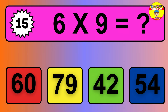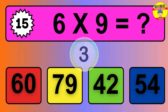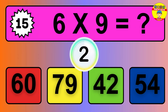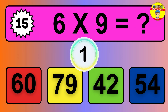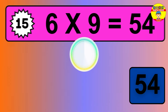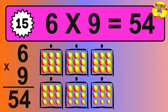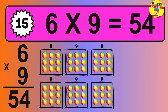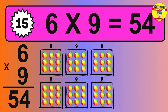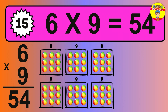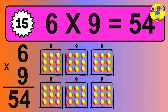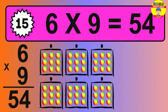Question 15. 6 times 9 equals what? The answer is 6 times 9 is 54. To calculate, we have 6 groups with 9 balls each one. So how many balls do we have? 54 balls.